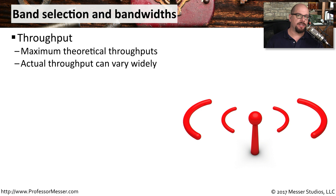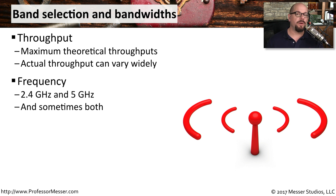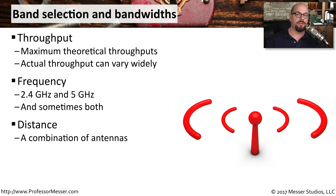We usually define the speed of wireless networks as throughput values and refer to them as maximum theoretical throughputs, because there are so many variables that can affect communication over a wireless network. There are also a number of frequencies that can be configured on these wireless access points, depending on the standards being used. Some standards support the 2.4 GHz range, others support the 5 GHz range, and in some cases an access point can support both simultaneously. It might also be important to define what distance the access point needs to communicate, which may require specifying a different kind of antenna.